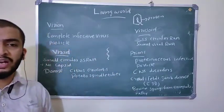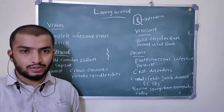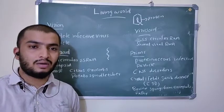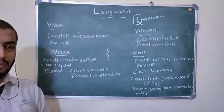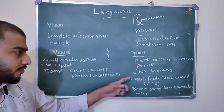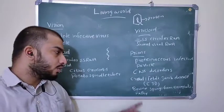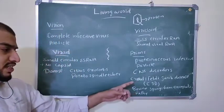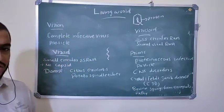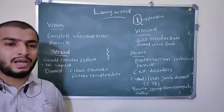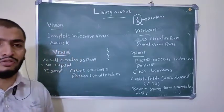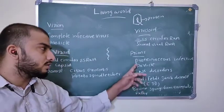Prions are not RNA molecules — they are infective protein molecules. These protein molecules can cause disease; they are not like a complete virus, only a protein particle. Prions especially affect the central nervous system and cause diseases such as Creutzfeldt-Jakob disease, CGD, and bovine spongiform encephalopathy — commonly called mad cow disease — and also scrapie disease of sheep.